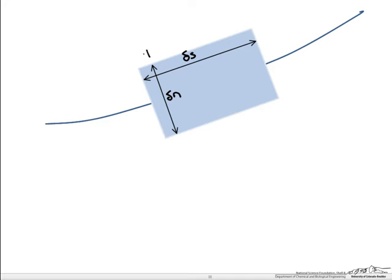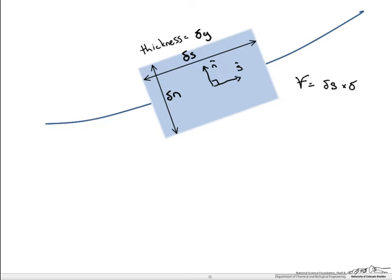And we are going to give this a thickness of delta y. These coordinates allow us to designate them regardless of what coordinate system this element may fall into. Thus its volume is going to be delta s times delta n times delta y.